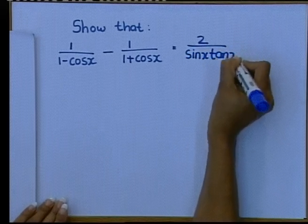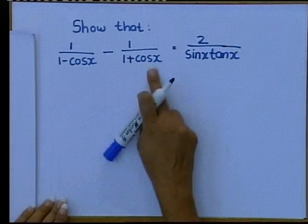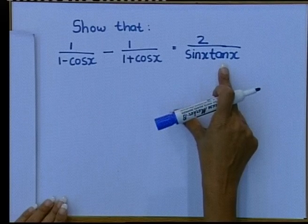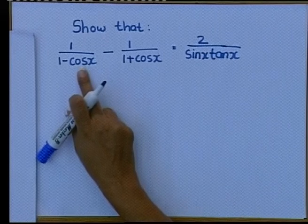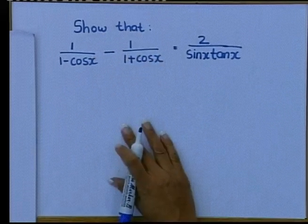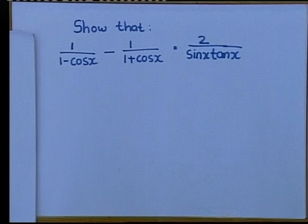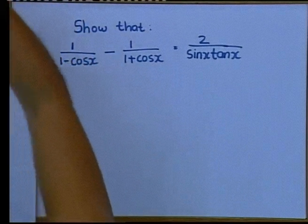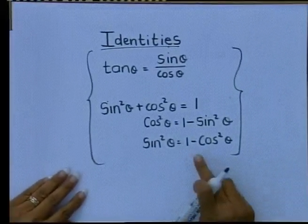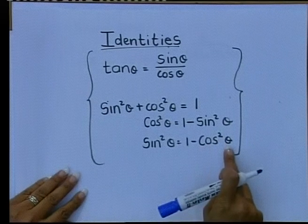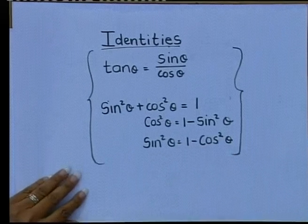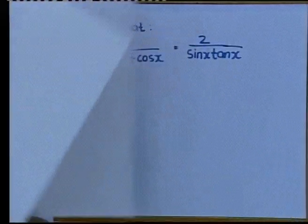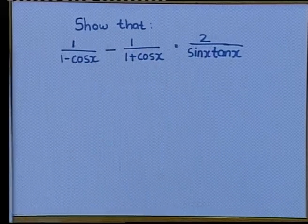I must prove that my left-hand side is equal to my right-hand side. Before you start, please everybody: 1 minus cos x is not an identity — you don't see a square there. 1 plus cos x is not an identity — you don't see a square there. If it was 1 minus cos squared theta, then you can substitute it to be sin squared theta. You don't see the square there, so it's not an identity.